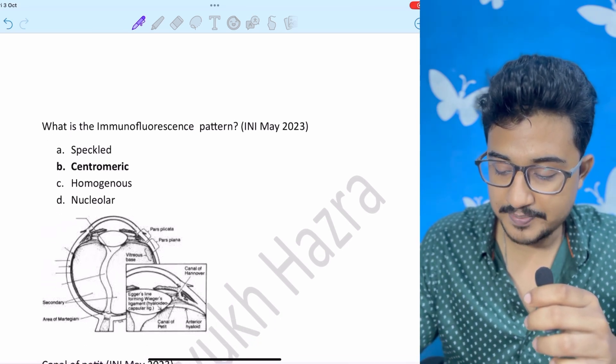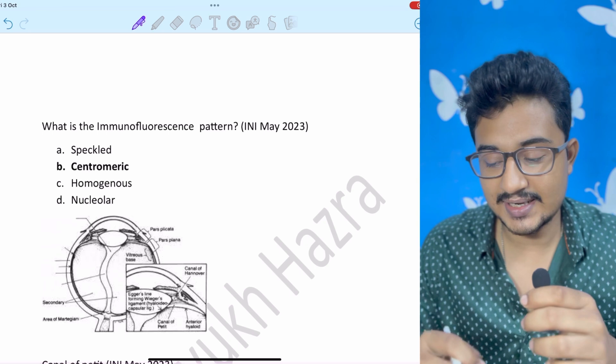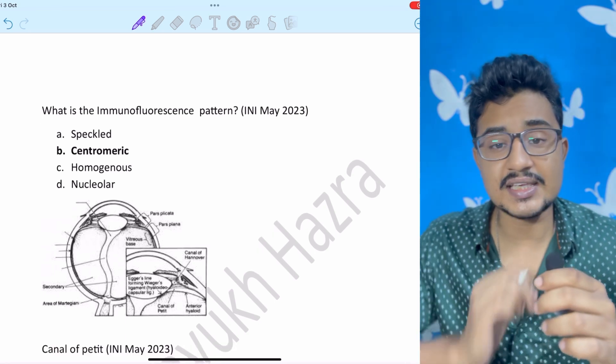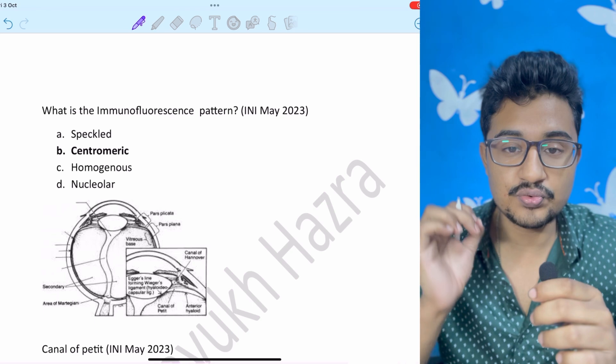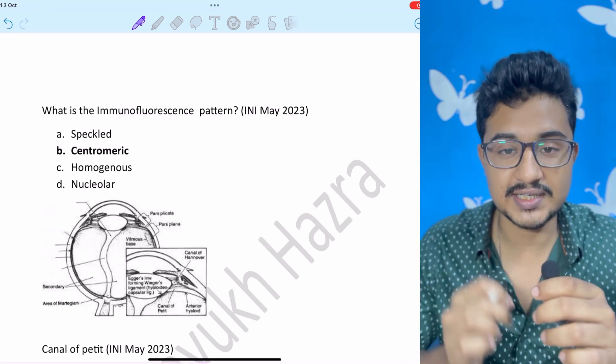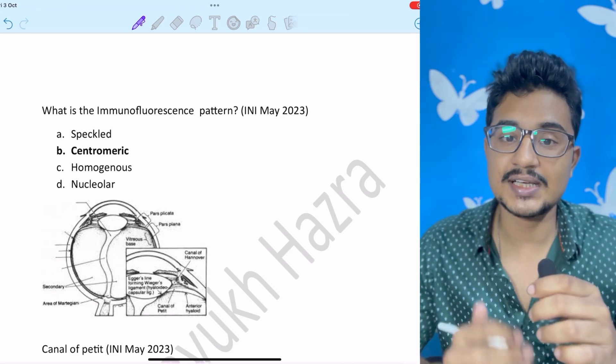And the canal of petit also. This same image was given in the INICET. So INICET gives classical images. It is very much important that you have a PDF or a digital image bank with all the classical images.